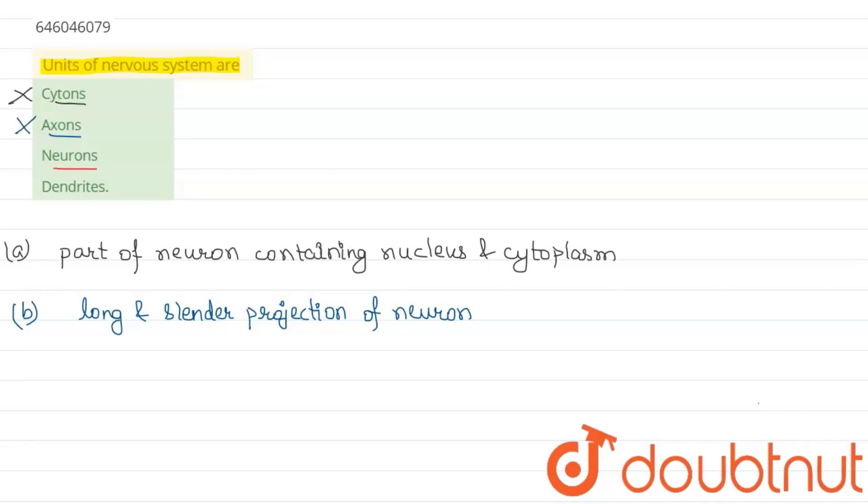Coming to the third option which is neurons. Neuron is the basic unit of the nervous system. These are specialized cells that are responsible for transmitting information to other neurons, muscles or glands. They are specialized cells used for transmitting information from one cell to another or from one muscle to another. So this option is correct.